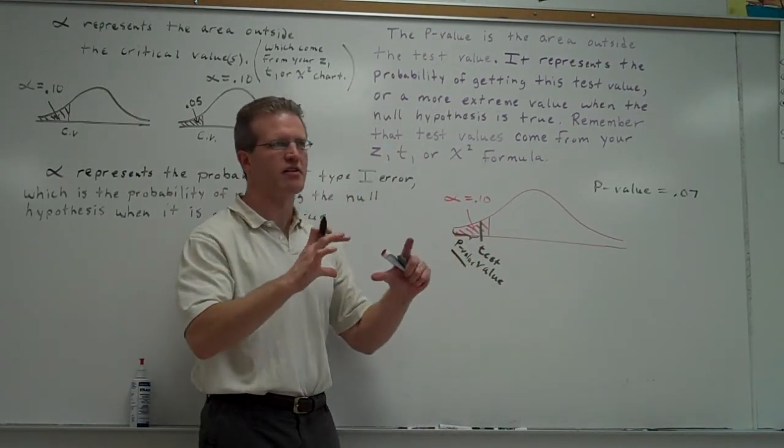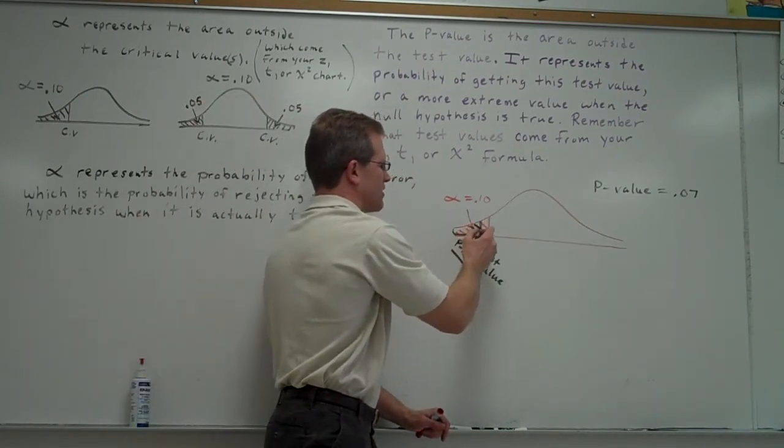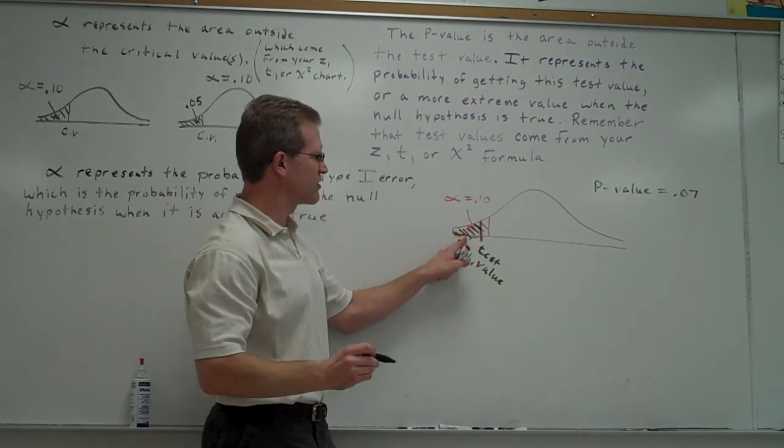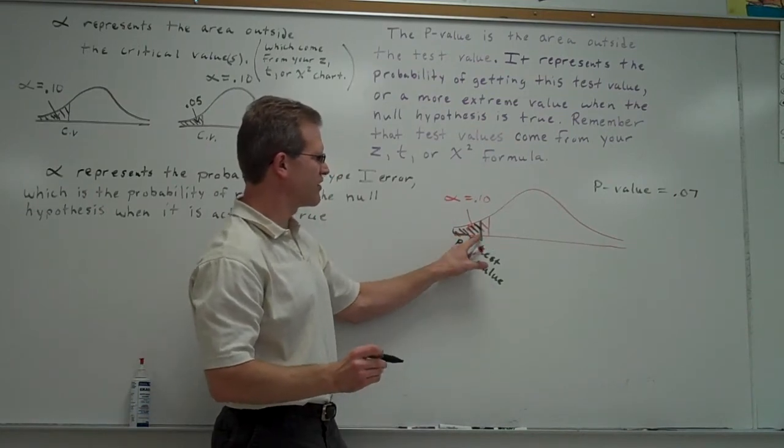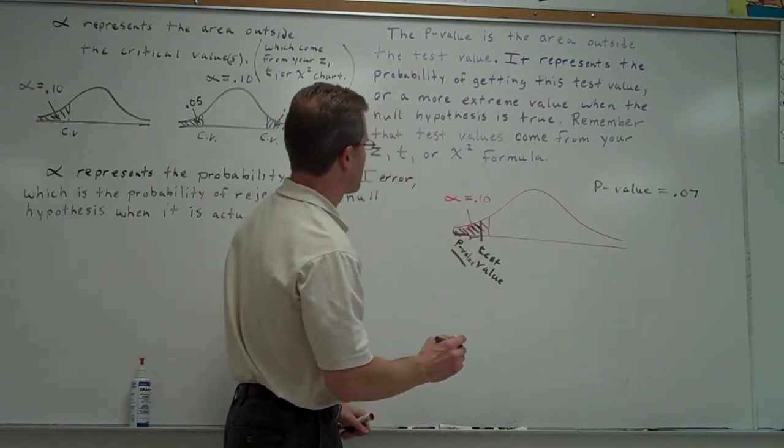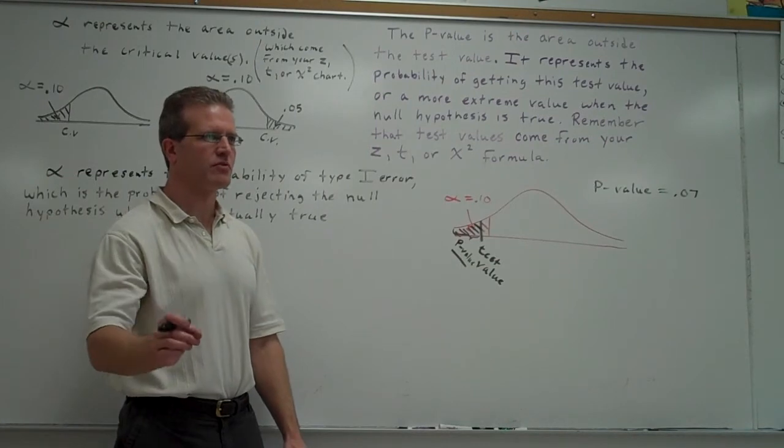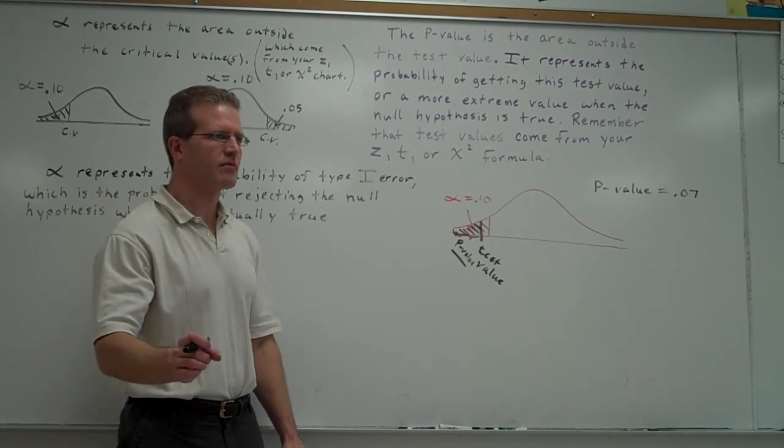So alpha and p-value are both tail areas. If the p-value is smaller, the black area is smaller than the red area, then the test value must be in the critical region. So the rule that you're going to see in the book is that when the p-value is less than alpha, you're going to reject the null.